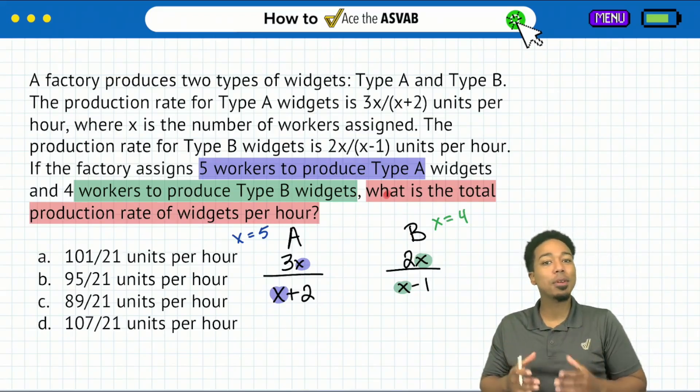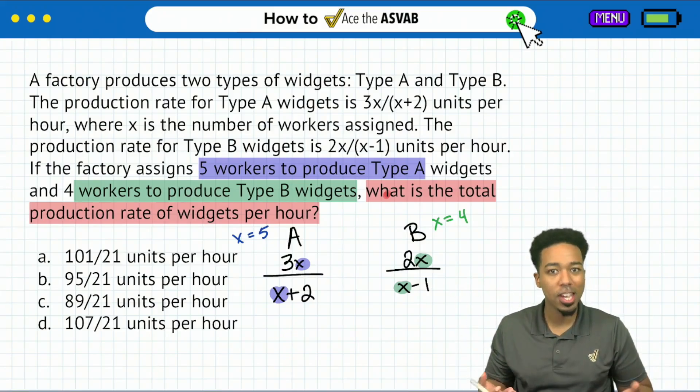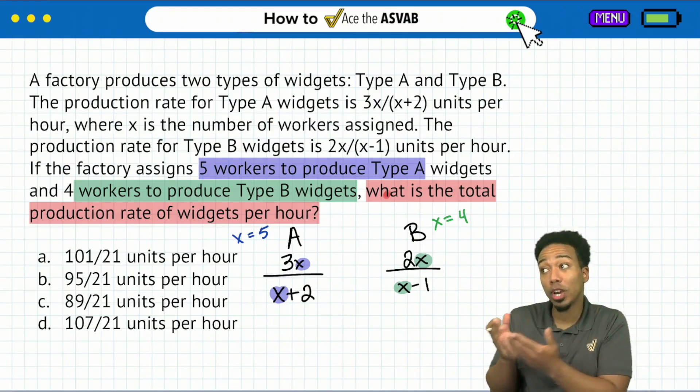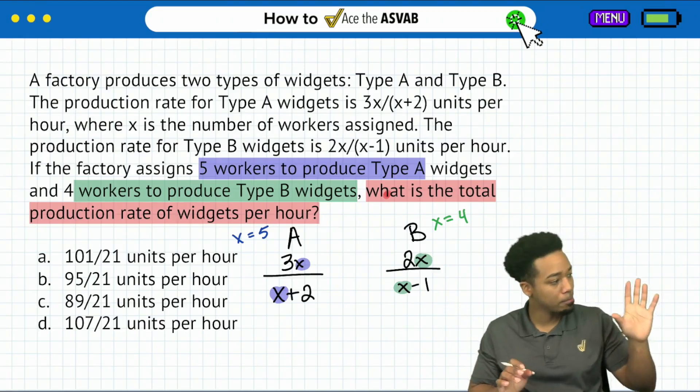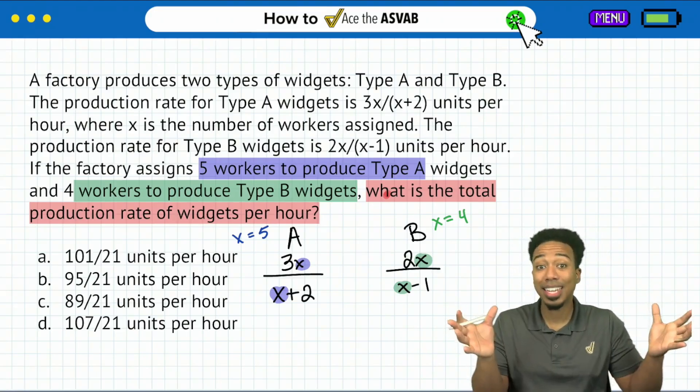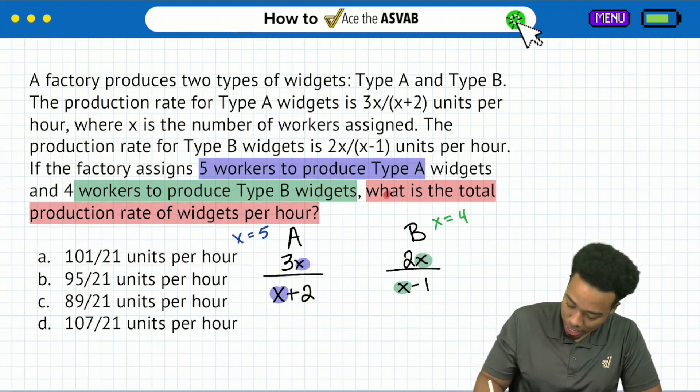So what I'm going to do now is I'm going to plug in each of those values for the corresponding widgets. Then understanding that if I'm trying to get the total production rate, if I have type A at this many widgets per hour, type B at this many widgets per hour, getting the total just means add. And that's what I'm going to do in the end.